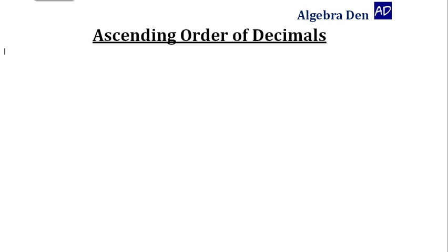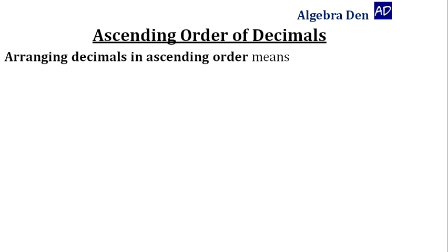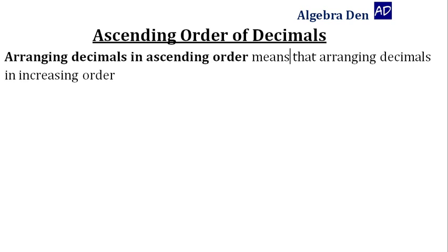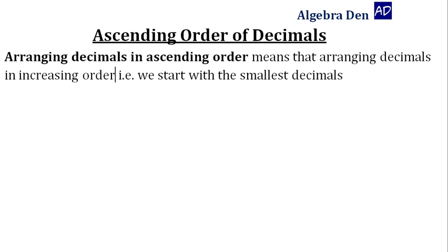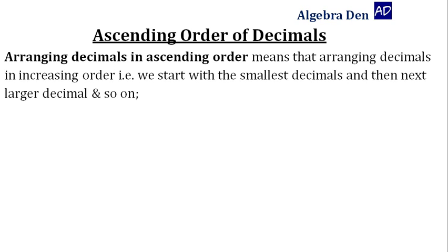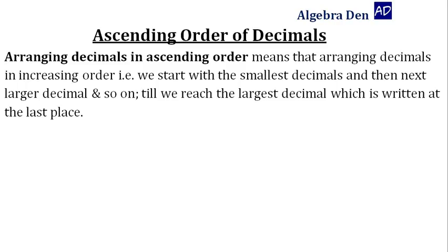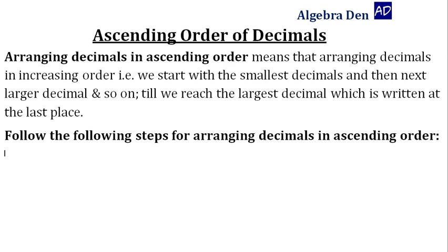Ascending order of decimals. Arranging decimals in ascending order means arranging decimals in increasing order. That is, we start with the smallest decimals and then next larger decimals and so on, till we reach the largest decimal which is written at the last place. Follow the following steps for arranging decimals in ascending order.